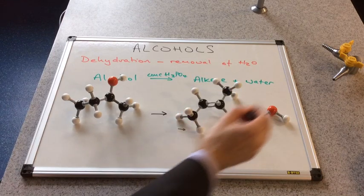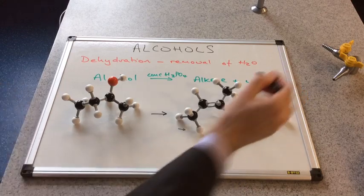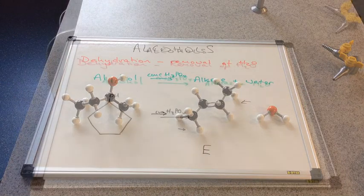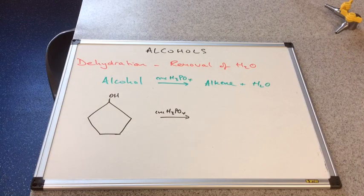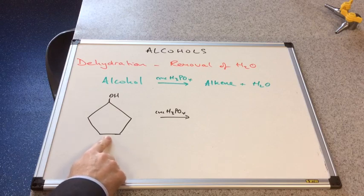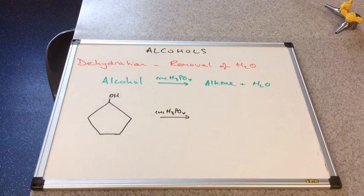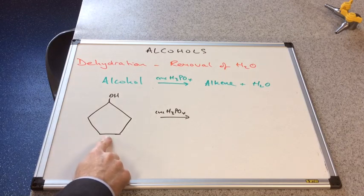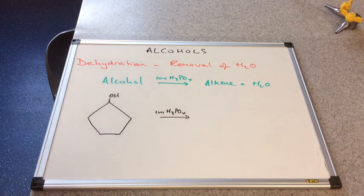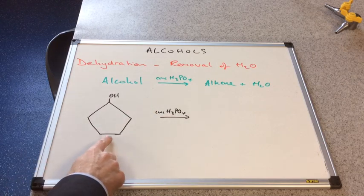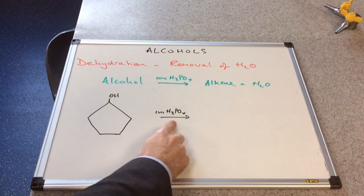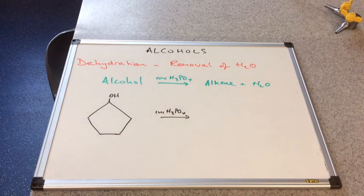If Z-but-2-ene is possible, then swapping the methyl and hydrogens around gives E-but-2-ene, where the priority groups are on opposite sides of the double bond. We're going to finish off by looking at an example more like what you'd see on an exam paper. There's a cyclic alcohol drawn in skeletal formula — very commonly used in exams — being reacted with concentrated phosphoric acid.